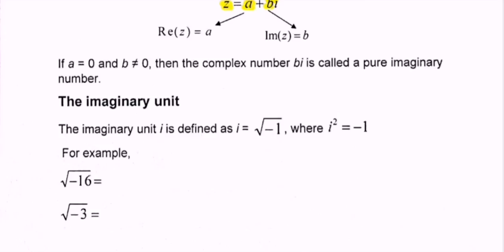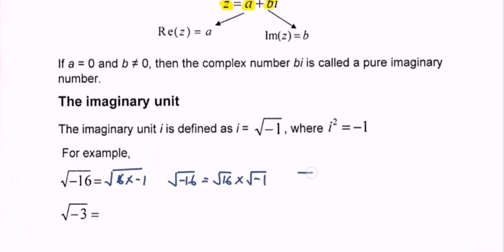For example, the square root of negative 16 can be written as the square root of 16 multiplied by negative 1. We can split this as the square root of 16 multiplied by the square root of negative 1. The square root of 16 equals 4, and the square root of negative 1 can be denoted as i. So the square root of negative 16 equals 4i.